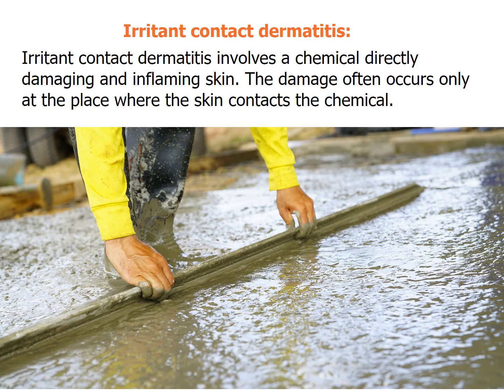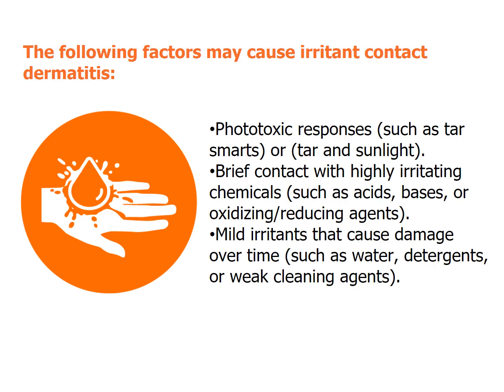Irritant contact dermatitis involves a chemical directly damaging and inflaming skin. The damage often occurs only at the place where the skin contacts the chemical. Causes include phototoxic responses such as tar and sunlight, brief contact with highly irritating chemicals such as acids, bases, or oxidizing or reducing agents, and mild irritants that cause damage over time, such as water, detergents, or weak cleaning agents.